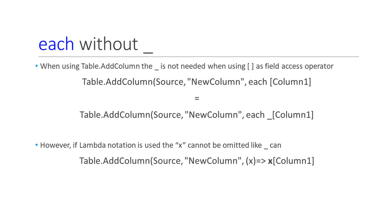When using some functions that are compatible with the each operator, there are some cases where the underscore is not needed, especially when using the square brackets field access operator. The most common function where this will be evident is the Table.AddColumn function. We see how we can include the underscore, but if we don't, it still achieves the same result. However, even though lambda notation is equivalent to each underscore in almost every case, if we use a lambda function instead of each underscore, then the x or other variable is required to be included.